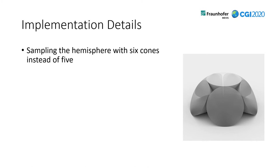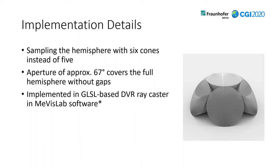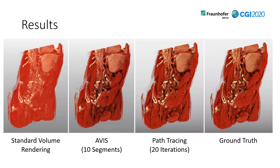For implementation details: the original approach by Crassin proposed using five cones, but we found that six cones cover the hemisphere much better. An aperture of approximately 67 degrees covers the full hemisphere without introducing gaps — 60 degrees introduces visible gaps but 67 degrees reduces them. The whole thing was implemented in a GLSL-based DVR ray caster in the MIRSLAB software, and we computed the lighting in the last quarter of each segment.